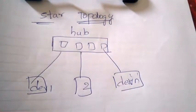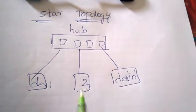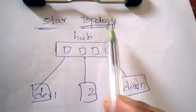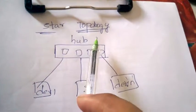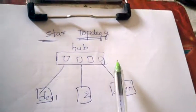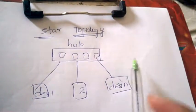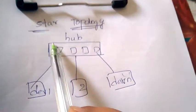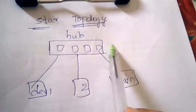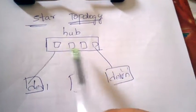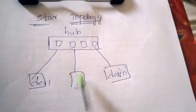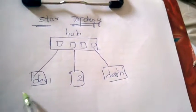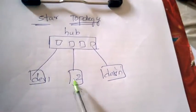Hello friends, welcome back to Best Way to Study. In this tutorial we are going to discuss about star topology. First let us see the architecture of the star topology. There will be a central hub, and to that hub all the devices will be connected.